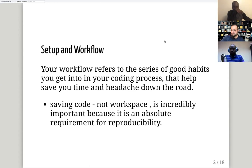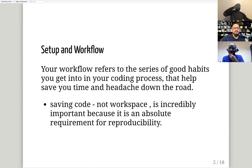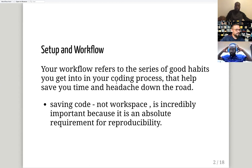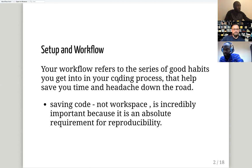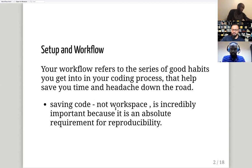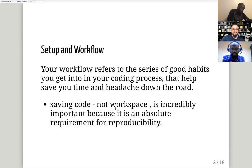You might be working on something today and after two months if you open your workspace, there might be changes — maybe you've changed some folders, your working directory has changed, or some things were done in an old version of your script. So it's always advised not to save your workspace, but save your code using a dot R or dot RMD extension. This is really important for reproducibility — if you share it with someone, they can run that code and reproduce your results.